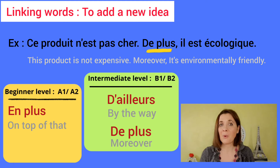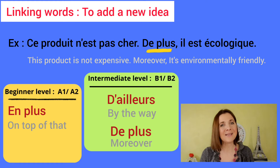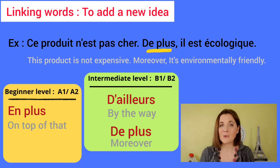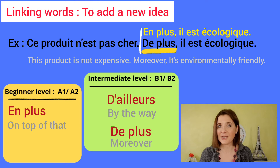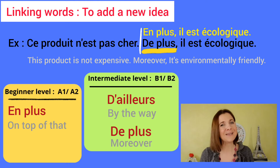An example with de plus: Ce produit n'est pas cher. De plus, il est écologique. You could also say en plus: Ce produit n'est pas cher. En plus, il est écologique.